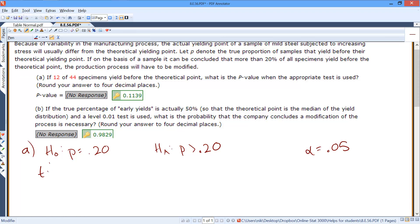So we need to find our test statistic, and we'll use z for this. And so it's always going to be a z. Now, our sample proportion in this case was 12 out of 44. Our hypothesized proportion is 20%.